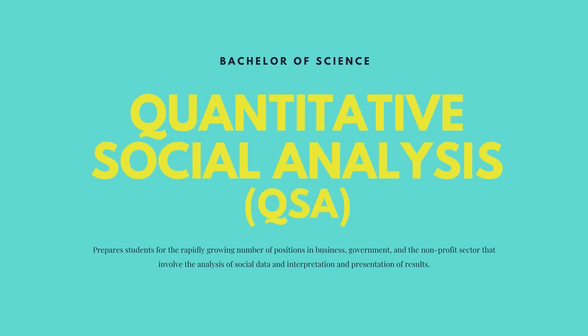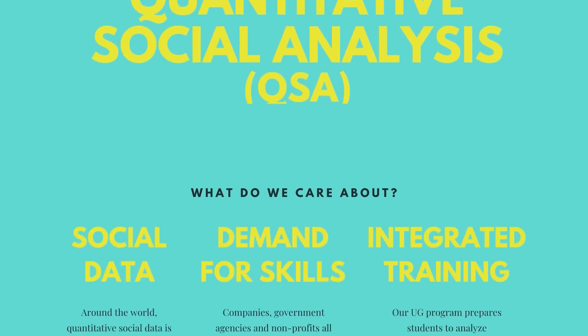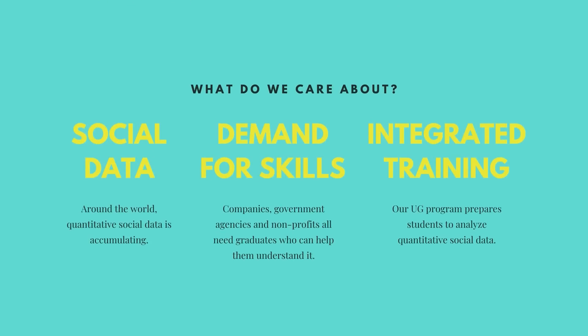This program provides a combined training in social science including sociology, political science, economics, and psychology, with a rigorous training in the use of quantitative methods to analyze social data. At present, few if any undergraduate programs prepare their students to analyze social data by providing an integrated training in social science theory and evidence, statistical methods, the analysis of social data, and the interpretation and presentation of results.